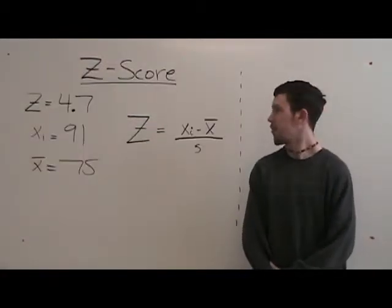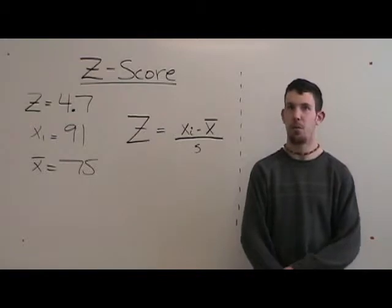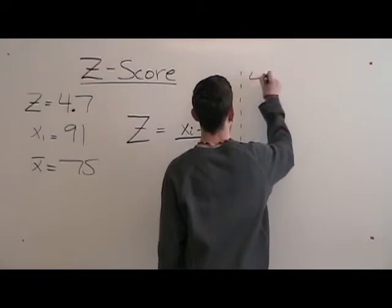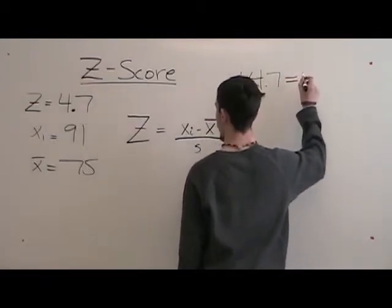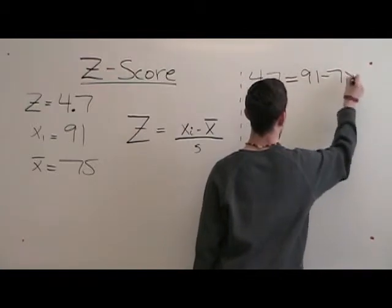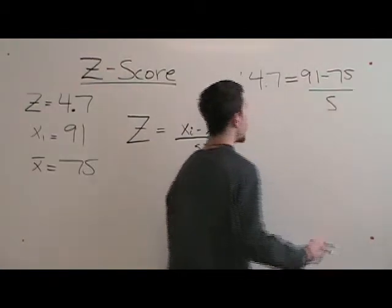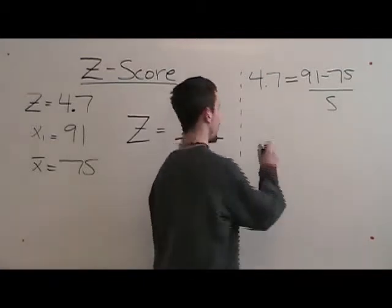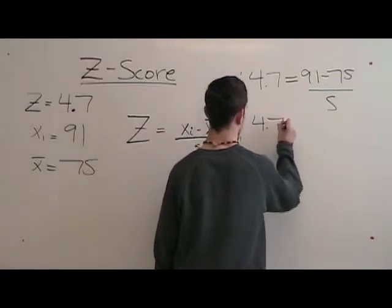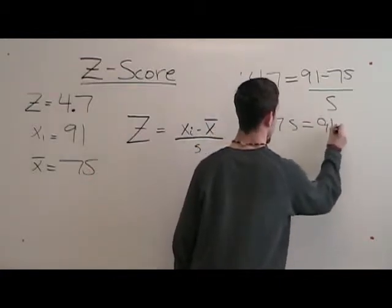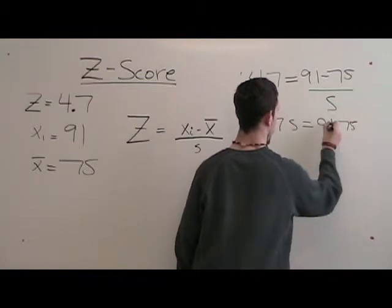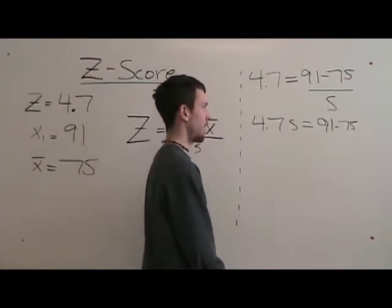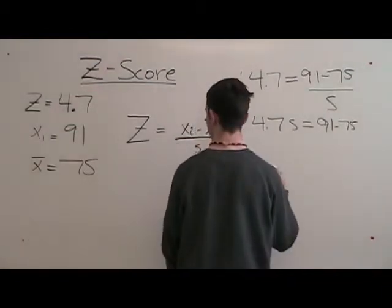In this problem, the z-score is 4.7, the xi is 91, and the x-bar is 75. First thing you do is multiply 4.7 times s, which is 4.7s. The next step is subtracting 75 from 91, which is 16.